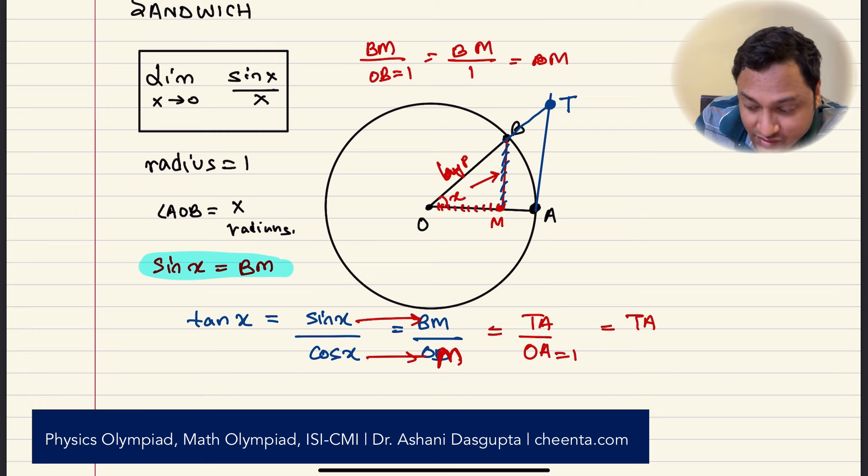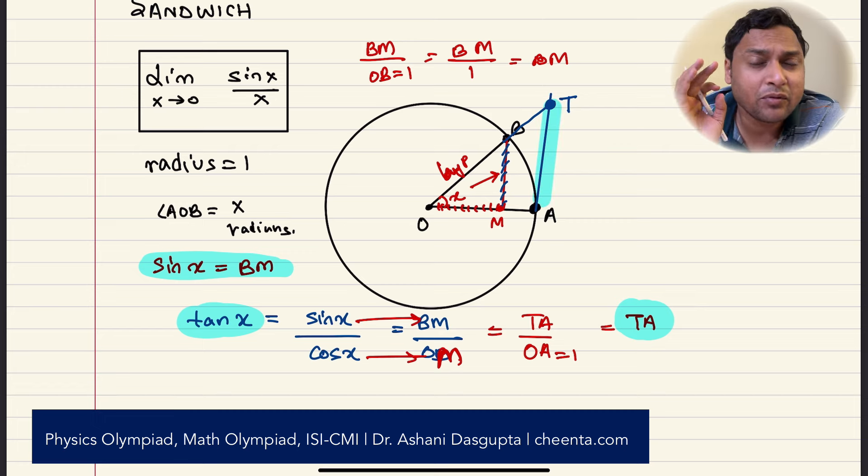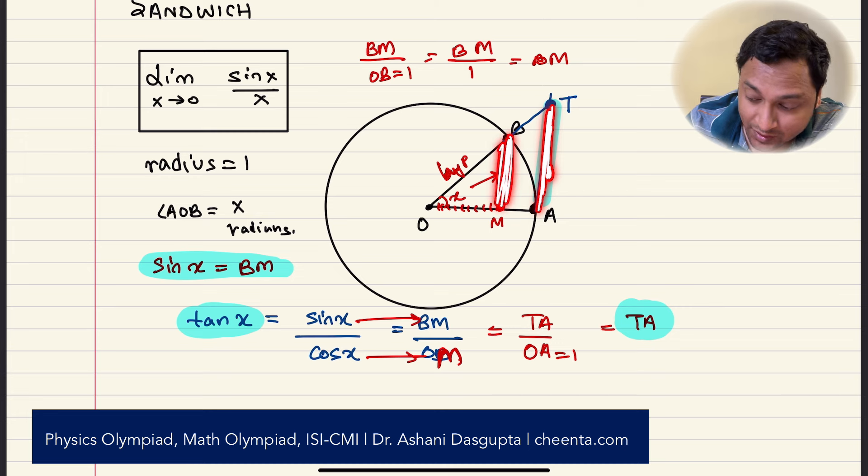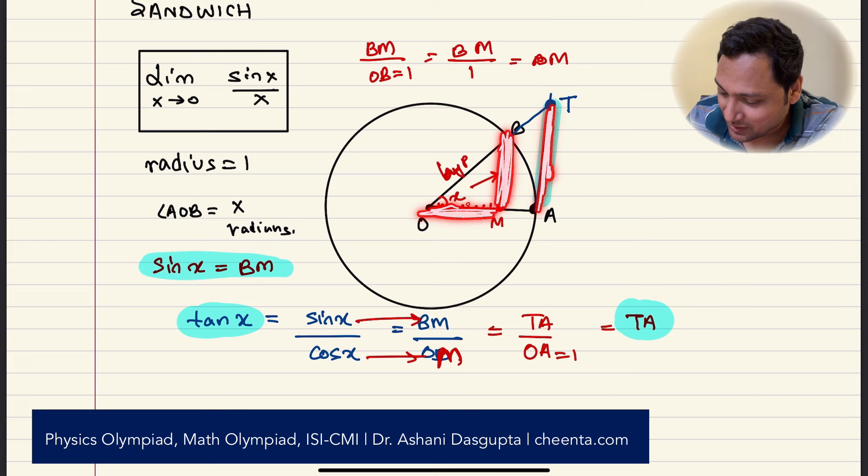So this is just equal to TA. In fact, what we just showed is tan x is just equal to TA, this length. And this is a very important diagram that you should keep in your mind. Tan of an angle is just this tangent line. Then, sine of an angle is this one. And cosine of an angle is this one. That's all. Okay.